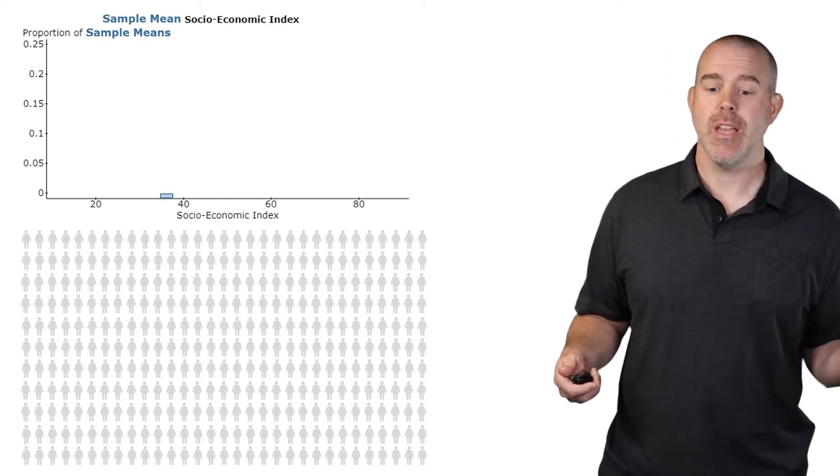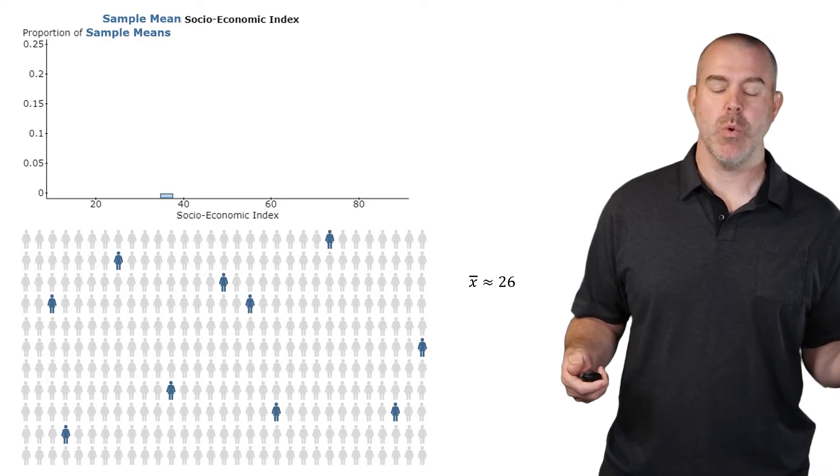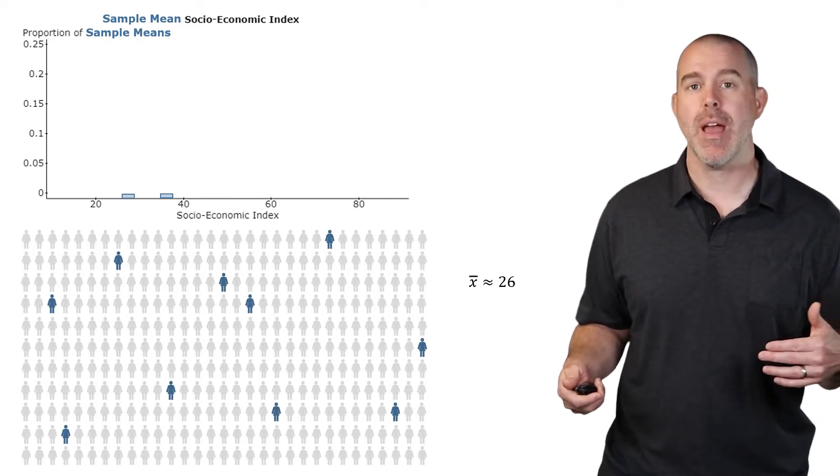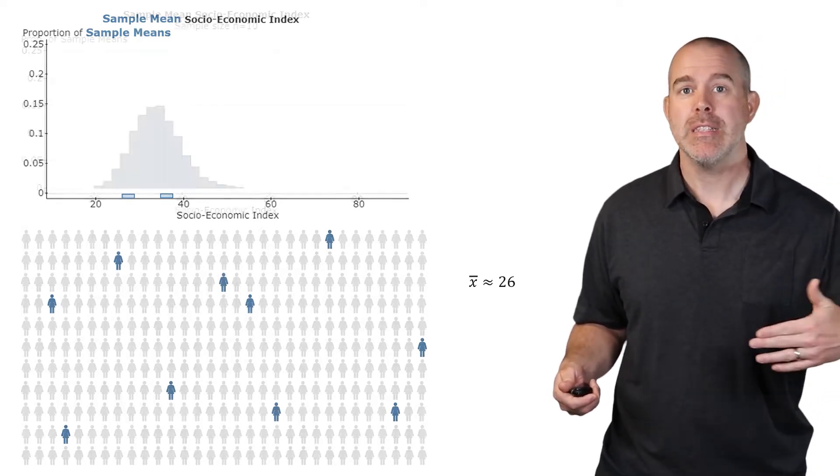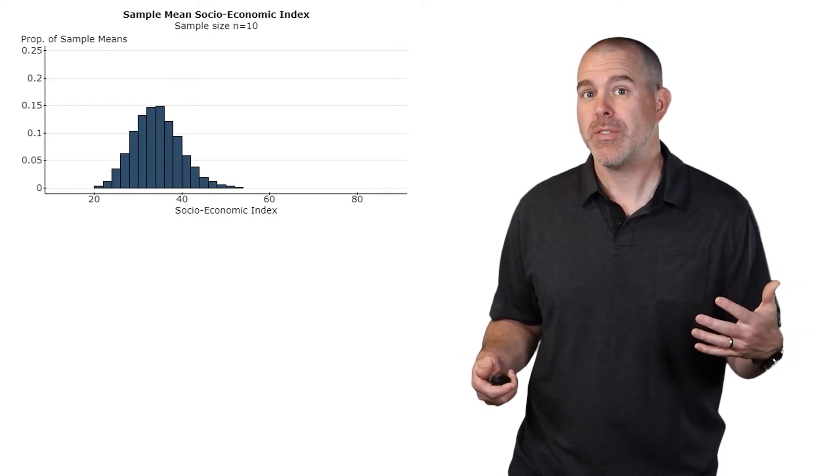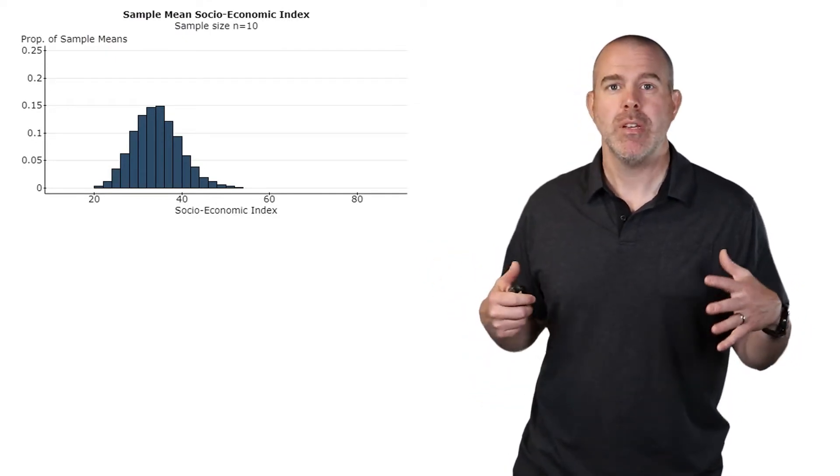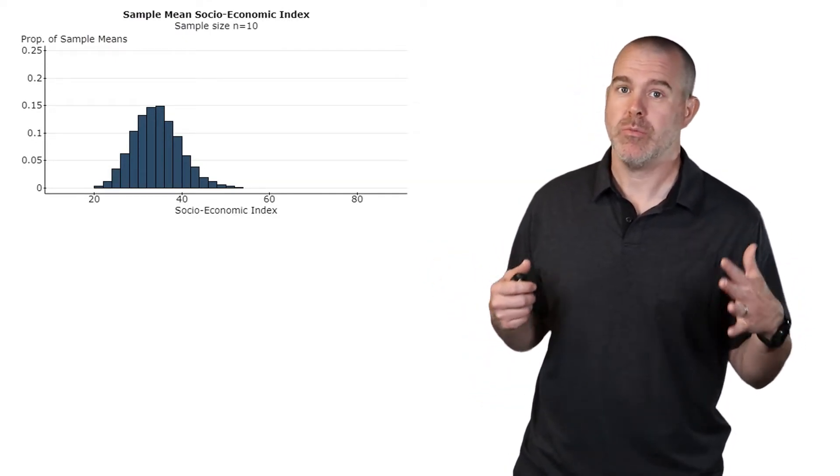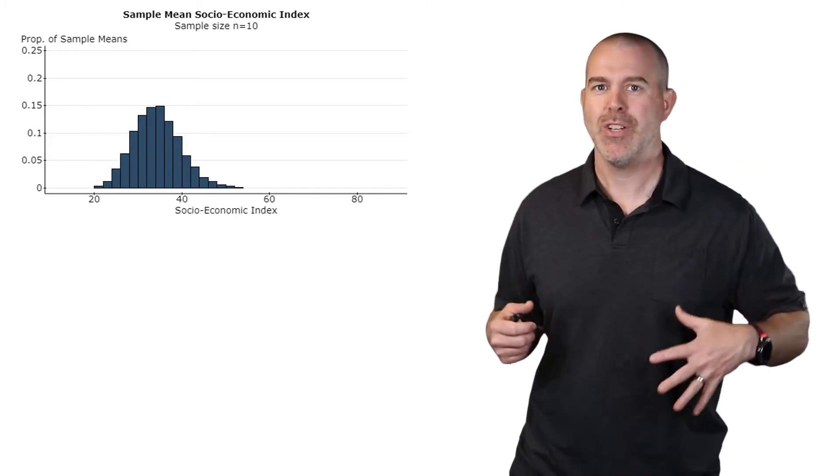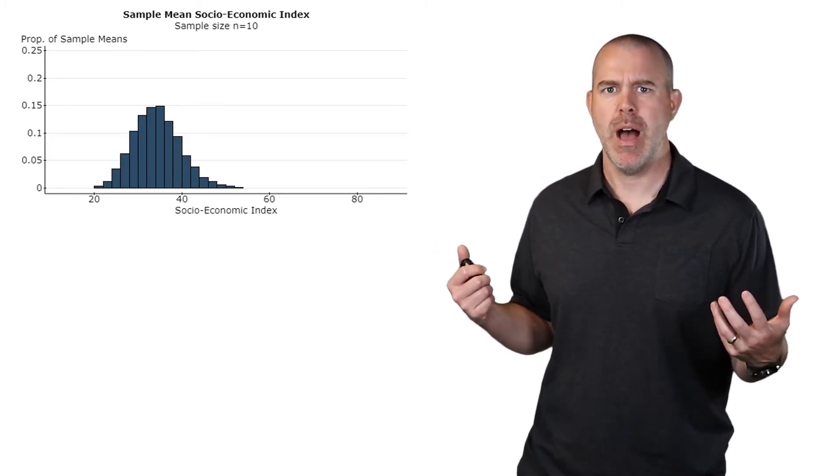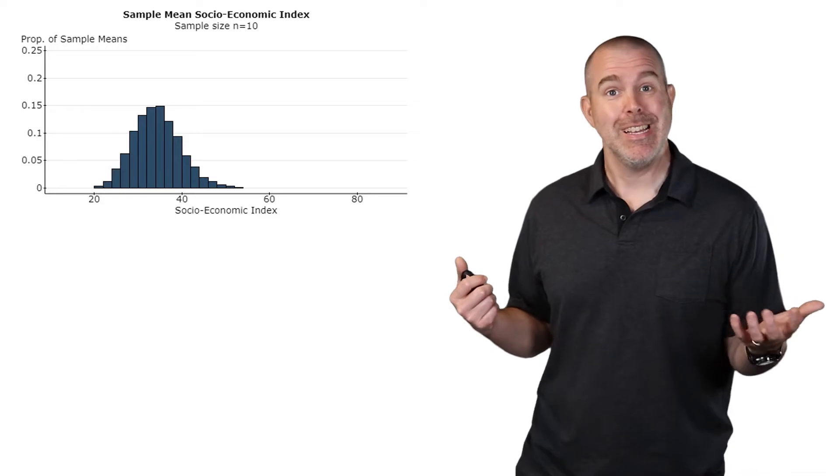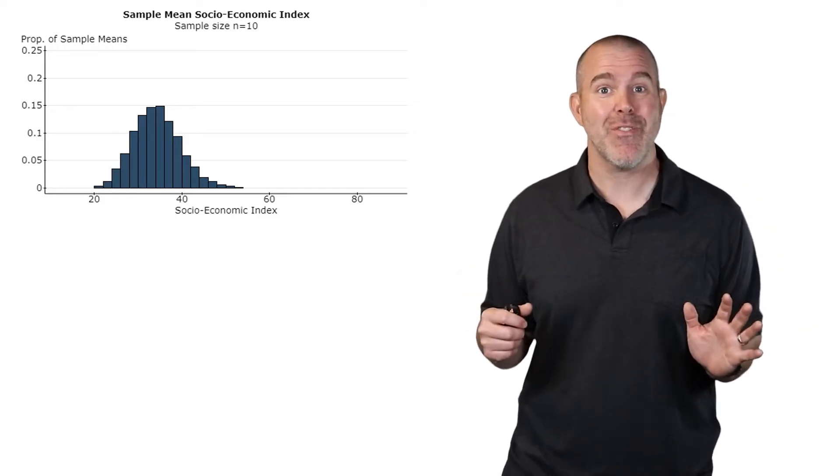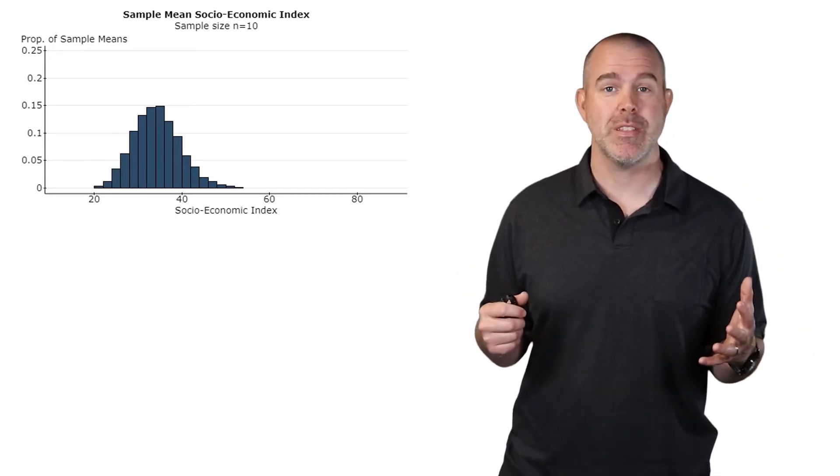Do another sample, say this sample, its mean is 26, put that up on the histogram, and then keep doing these. And when we do all samples of size 10, this isn't all samples of size 10 because there's way too many of them, but this is a really good number of them. You can see very different distribution for the sample means.